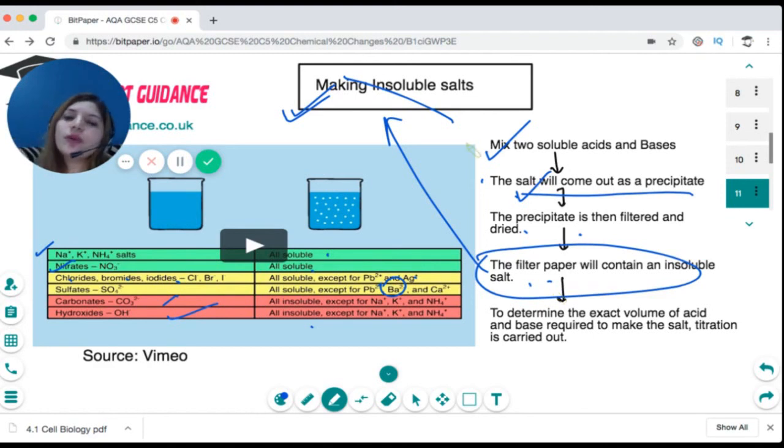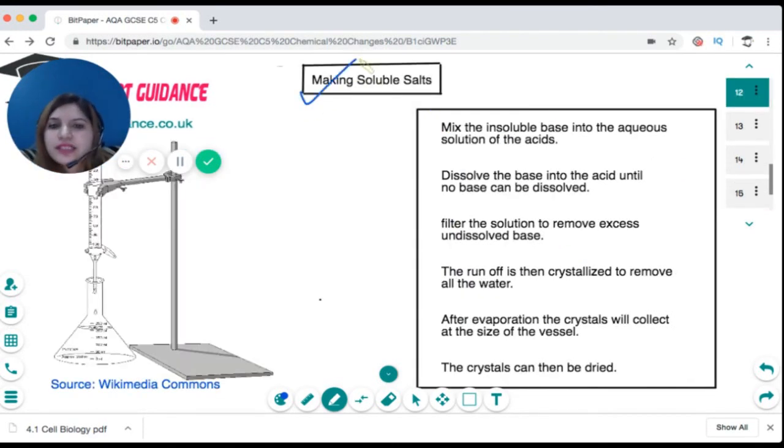To make these soluble salts, you mix insoluble base into the aqueous solution of the acid until all the base dissolves. When the base does not dissolve, you stop there. You filter the solution to remove excess undissolved base. The runoff will be your salt with water, then you crystallize that solution. All the water will evaporate and the crystals of your salt will be left. Or you can determine the exact quantities of acids and base by a titration setup. You will get salt and you can do crystallization to get the soluble salt.